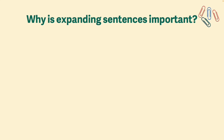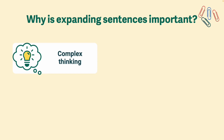So why is expanding sentences important? The first reason is that it helps you develop your complex thinking skills. When you use because, but, and so, you're thinking about the relationships of things that are happening in the text. You're thinking of results and consequences and contrasts — and these are all really complex thinking skills that you're going to strengthen as you complete a Quill Reading for Evidence activity.